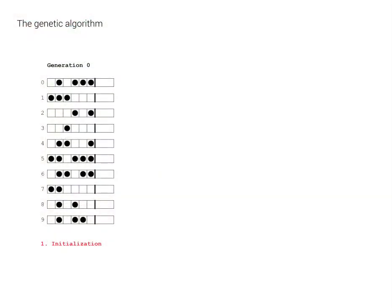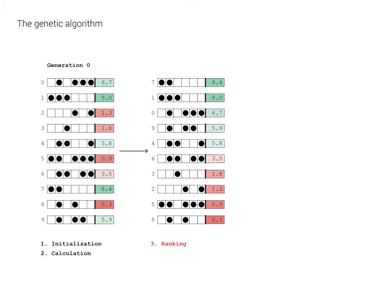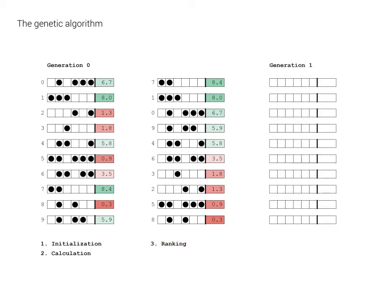The computer creates ten random designs by randomly flipping switches — these six parameters lead directly to a design, like a certain kind of building for each combination. Then it scores them, gets the metrics back from the model, and ranks those designs from best to worst. The job of the genetic algorithm is then to develop the next generation of designs, just like nature does.